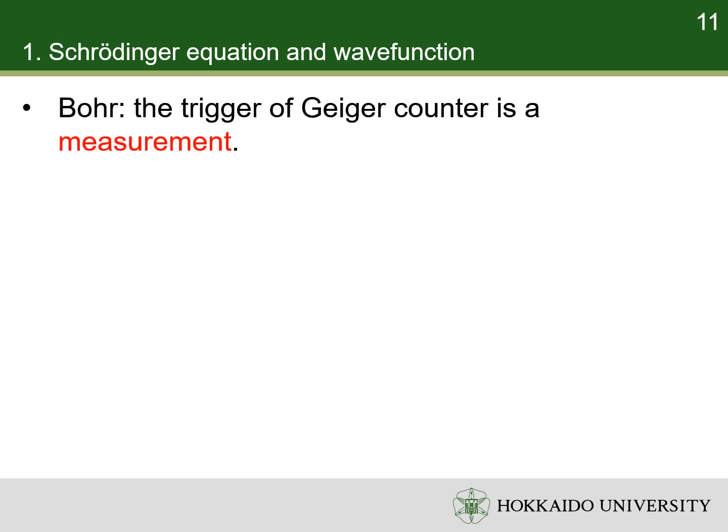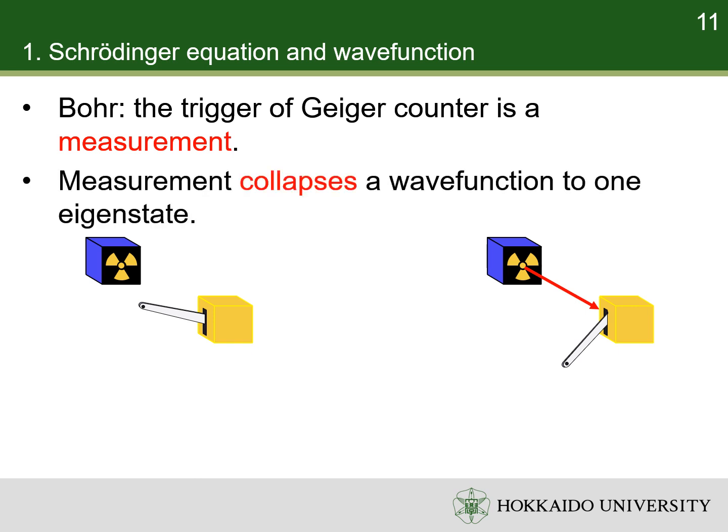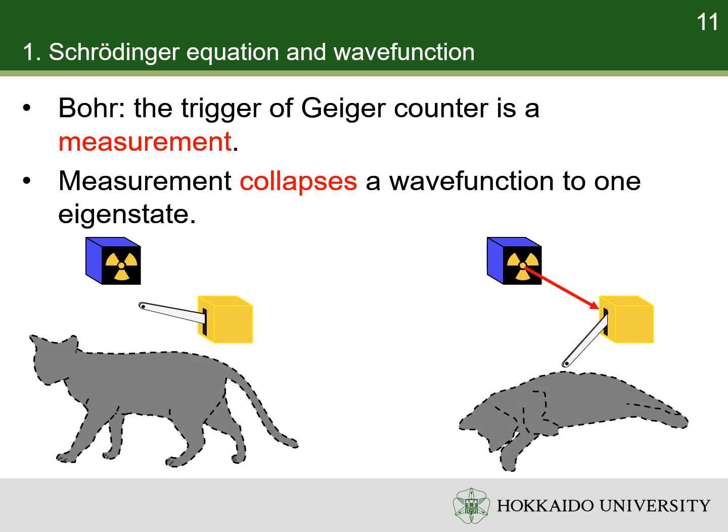A resolution of the paradox by Bohr is that the triggering of the Geiger counter counts as a measurement of the state of the radioactive substance. Measurement by a Geiger counter alone is sufficient to collapse a quantum wave function before any human knows of the result. Because a measurement has already occurred deciding the state of the cat, the subsequent observation by a human records only what has already occurred.